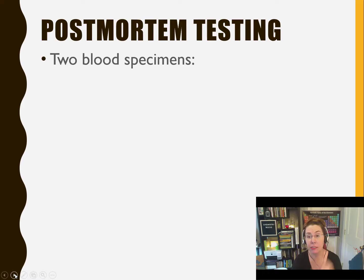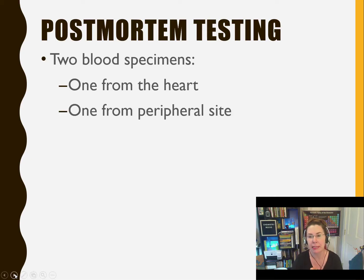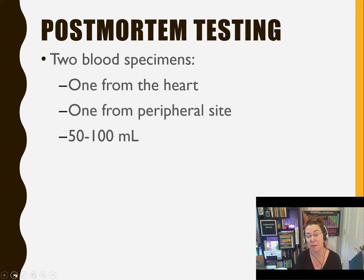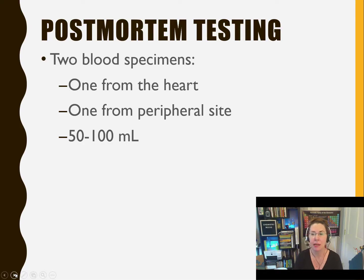First, they would take two specimens of blood, but the quantities would be quite different here. They would take one specimen directly from the heart and another from a peripheral site — an arm or a leg — usually between 50 and 100 milliliters of blood. While that sounds like a lot, this person has already passed away. Also, multiple tests may need to be done or repeated, and once the person has been embalmed after the autopsy, that blood is gone and will never be available for testing again. So it's important that a sample of sufficient size is taken at the time of the examination.